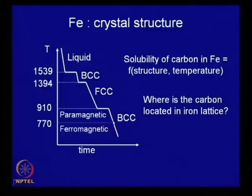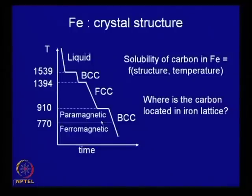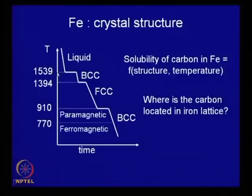The enthalpy change at the Curie temperature is negligible, so you do not get any step in the cooling curve, but if you measure magnetic property you do find a change. So as you heat iron from room temperature to its melting point, it converts from ferromagnetic to paramagnetic state at the Curie temperature, then from paramagnetic BCC it gets converted into face-centered cubic. Again at 1394°C it gets converted back into body-centered cubic, and then melting takes place at 1539°C.